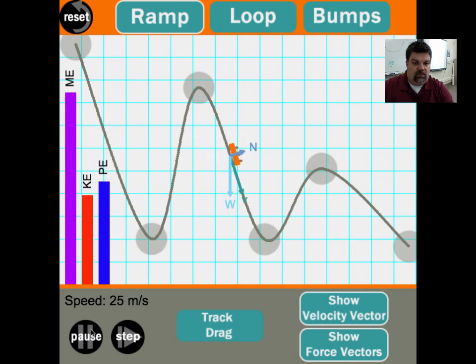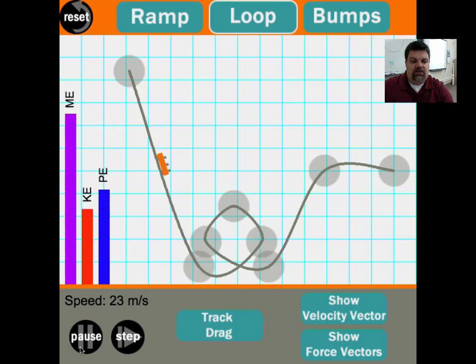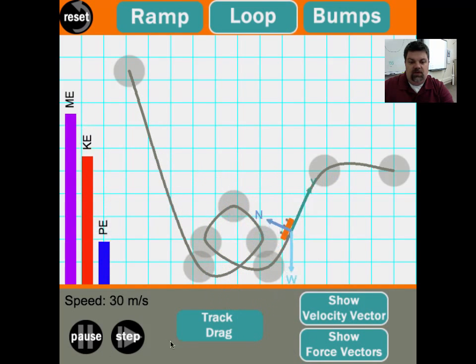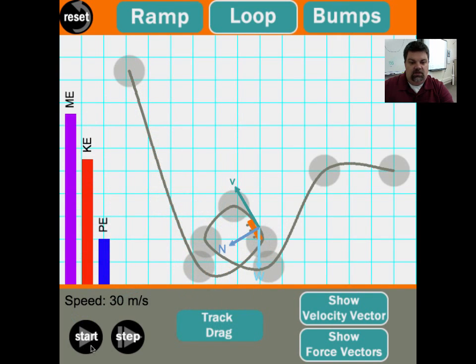which is why when we do a loop, this is what keeps it on the track, because as we enter a loop, watch what happens with the velocity vector. Which way does that cart want to go? It wants to go up. Which way is the track pushing against the cart? Down. Down.